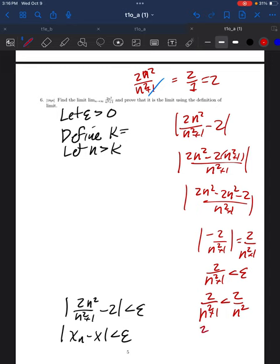So, if you want 2 over n squared to be less than epsilon, then you want 2 over epsilon to be greater than n, or less than n squared, sorry. Which means you want n to be greater than the square root of 2 over epsilon.